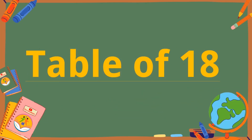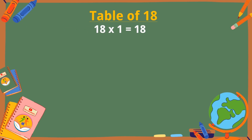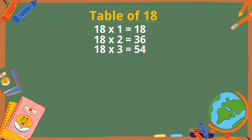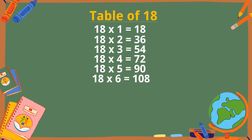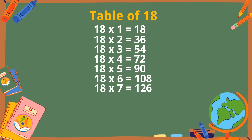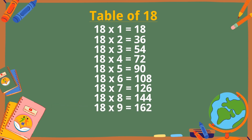Table of 18. 18 ones are 18, 18 twos are 36, 18 threes are 54, 18 fours are 72, 18 fives are 90, 18 sixes are 108, 18 sevens are 126, 18 eights are 144, 18 nines are 162, 18 tens are 180.